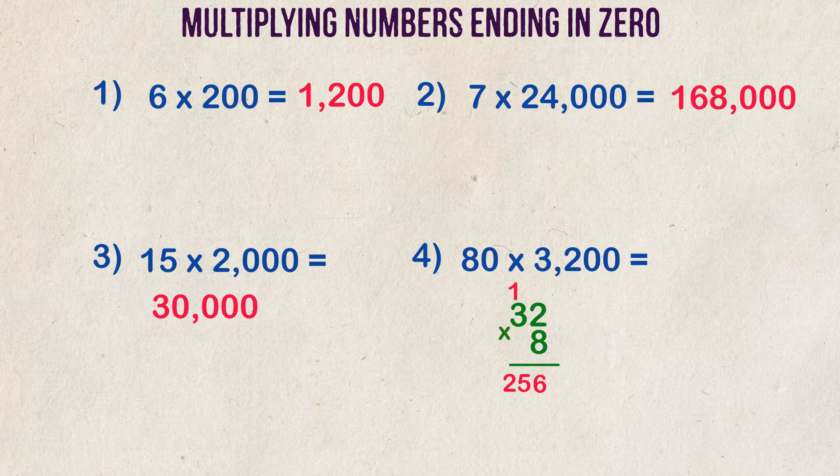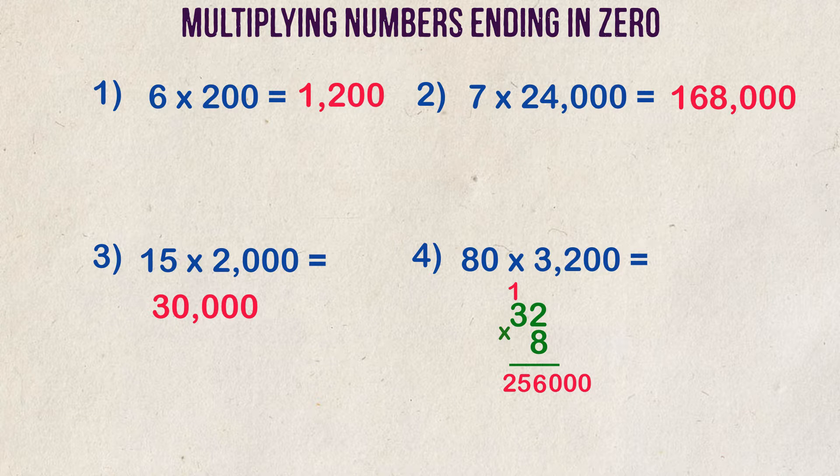We have a total of three zeros in this problem. One coming from the 80 and two coming from 3,200. We take the product of 8 times 32, which is 256, and we add another three zeros. The final answer is 256,000.